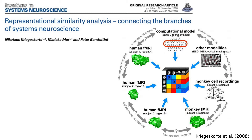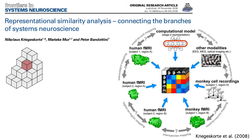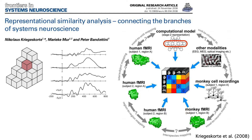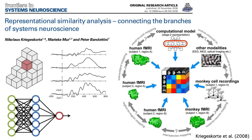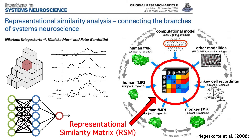Each of these sources of data has a different format, which makes them difficult to compare directly. For example, we have BOLD activation across a set of voxels in fMRI, voltage over time at a bunch of electrodes in EEG, and a pattern of activation across the units of a neural network model. RSA solves this problem by converting each source of data into a Representational Similarity Matrix, or RSM. We can then look at how well the RSMs from the different data sources are correlated with each other.